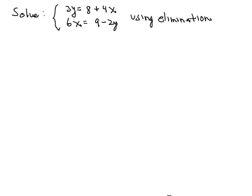Let's next tackle solving a system of linear equations again using the elimination method. And the system that we have is 3y being equal to 8 plus 4x and 6x equal to 9 minus 2y.